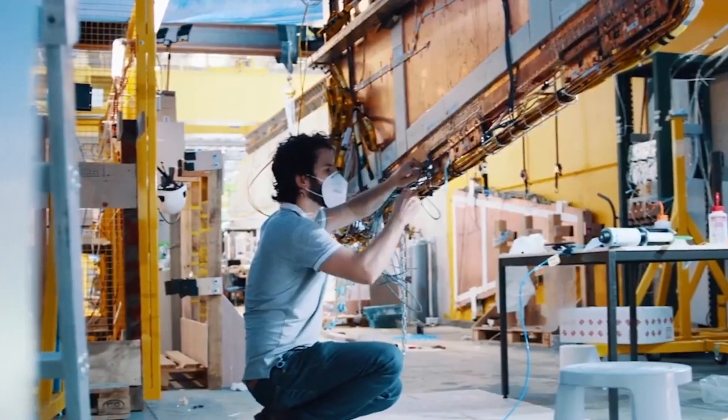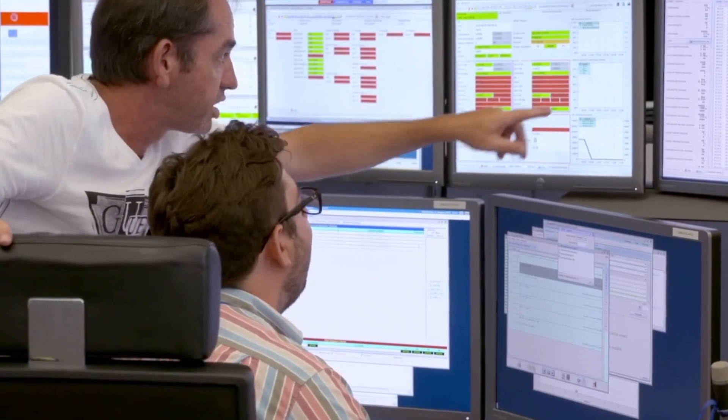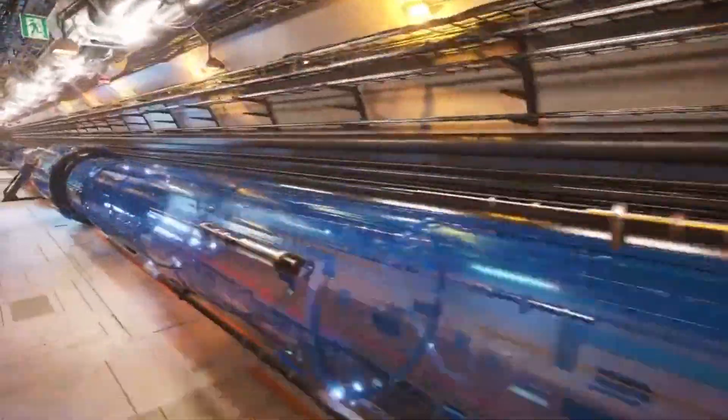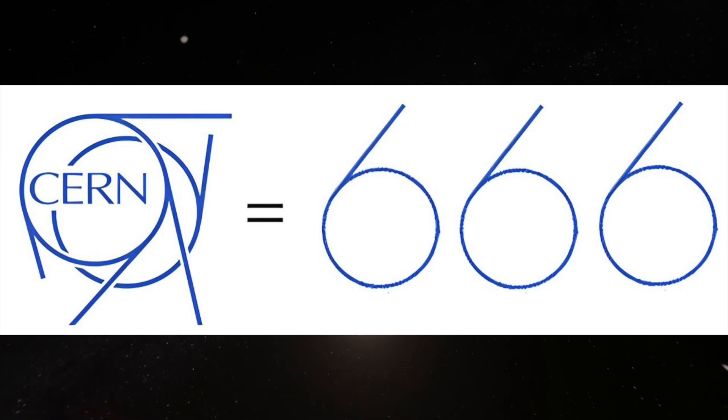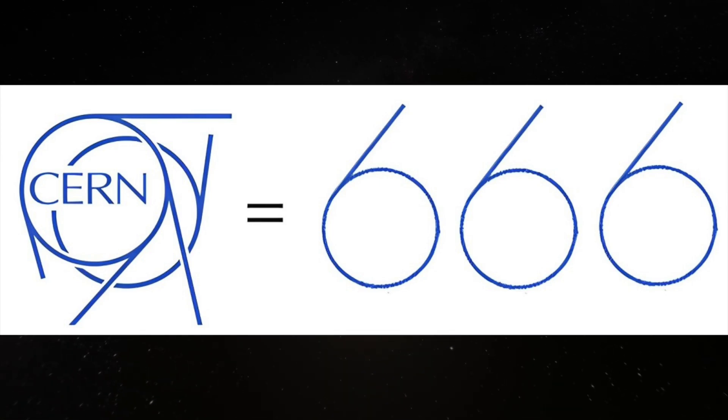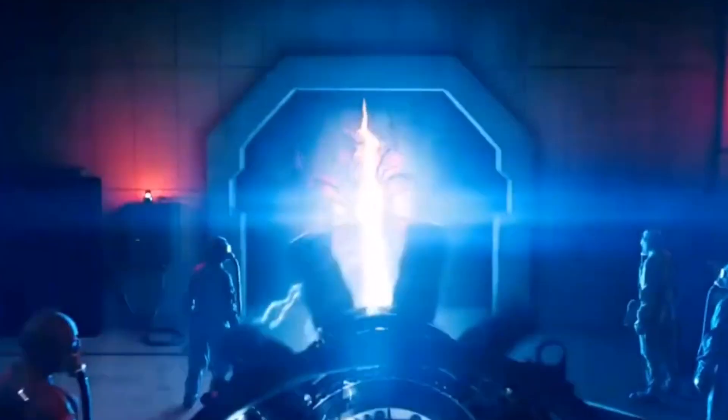Additionally, there have been claims of ritualistic practices or occult symbolism associated with CERN's facilities, with some theorists claiming that the CERN logo resembles the 666 symbol, leading to unfounded allegations of dark intentions behind the scientific research conducted there.